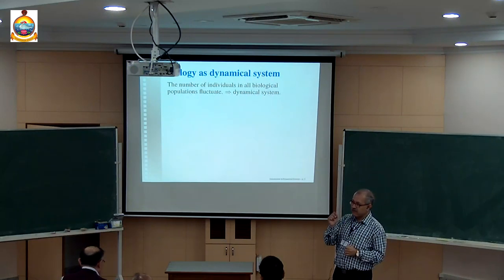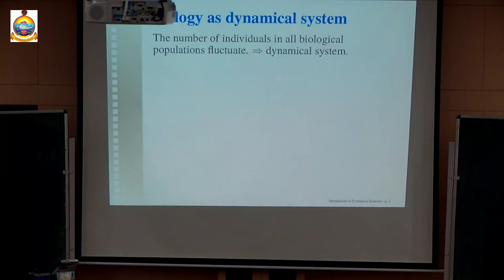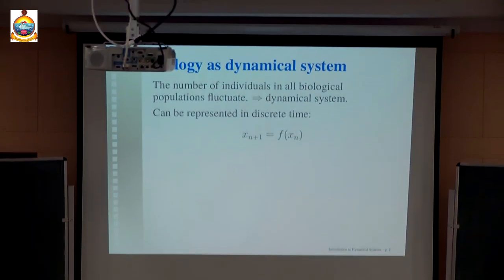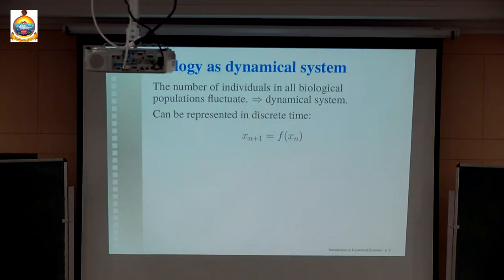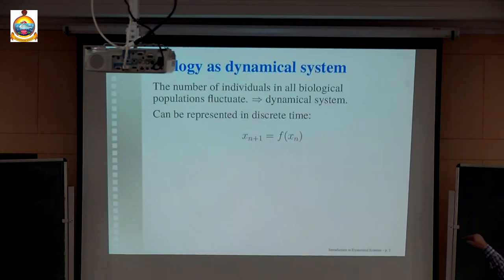We have to define what a dynamical variable is. In this case it is the number of individuals in a species, and that changes with time. Since the number of individuals is a discrete number — you cannot have 2.5492 individuals — it is a discrete number and changes discretely. That can be conveniently represented as a map equation: in the nth generation, if the number is x_n, then that gives the number of individuals in the (n+1)th generation. So x_{n+1} is a function of x_n. An equation like this is called a map.